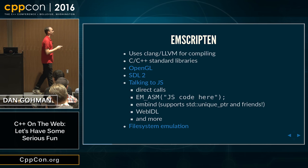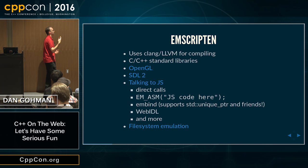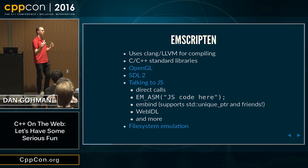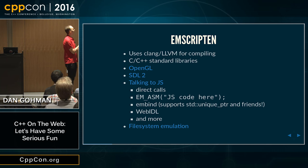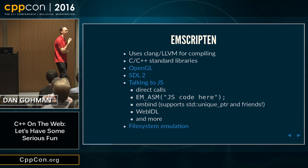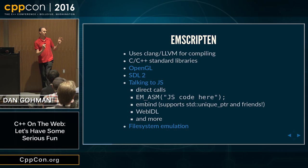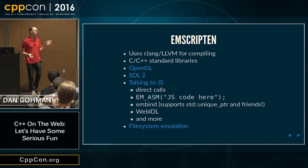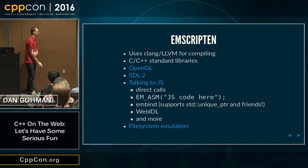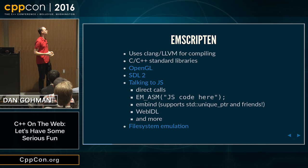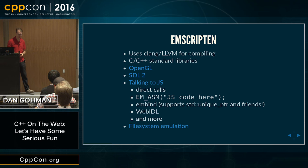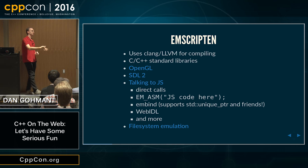Emscripten has lots of good stuff in it. It uses Clang and LLVM under the hood to do the C++ front-end work and optimization work. There's a custom JS back end, which is now also augmented to produce WebAssembly. There are C++ standard libraries and libraries that provide standard C++ OpenGL bindings. OpenGL is transparently remapped onto WebGL inside the browser, which roughly corresponds to GL ES2. WebGL 2 is coming to browsers relatively soon, which will bring GL ES3 APIs.